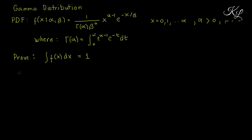Now let's start with our proof. The integral of the probability density function for the gamma distribution is: 1 over beta raised to alpha, times x raised to alpha minus 1, times e raised to negative x over beta, dx, from x equals 0 to infinity.